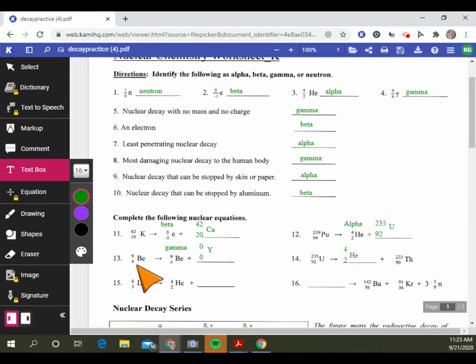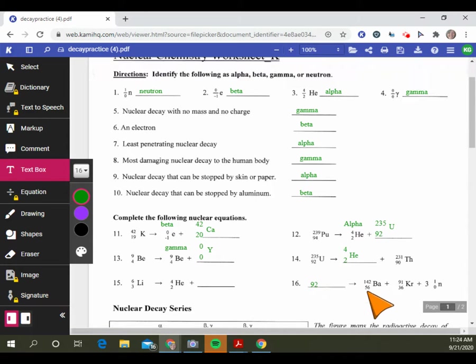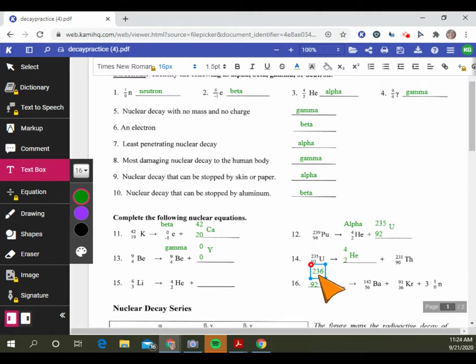Go ahead and do number 15 for yourself. Number 16 is an example of neutron decay. It's asking what did you start with. If I know I had barium and krypton with 56 protons and 36 protons, and the neutrinos had no protons, that's 92. Adding the masses 142 and 91, plus three of these, you come up with 236. The element with atomic number 92 is uranium.